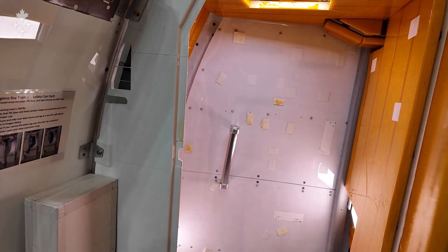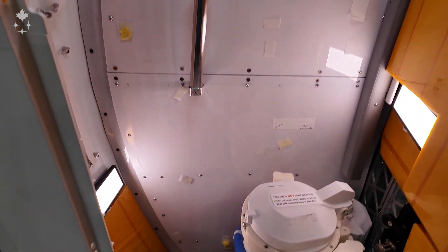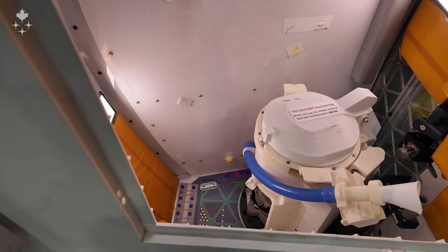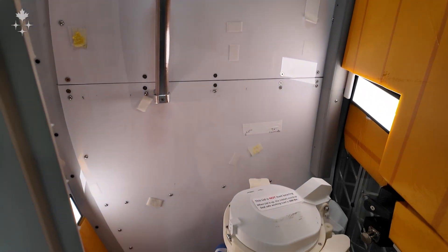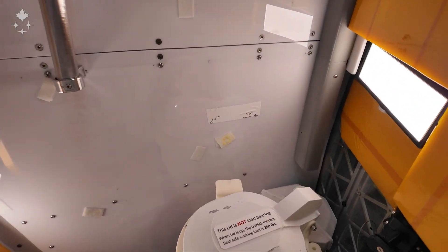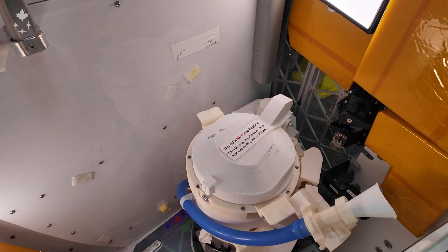So here you can see the toilet and there's enough room for you to float in here and close the door. This is just a toilet that we use for training and mocking up things to get a perspective on how we're going to manage the system on orbit.